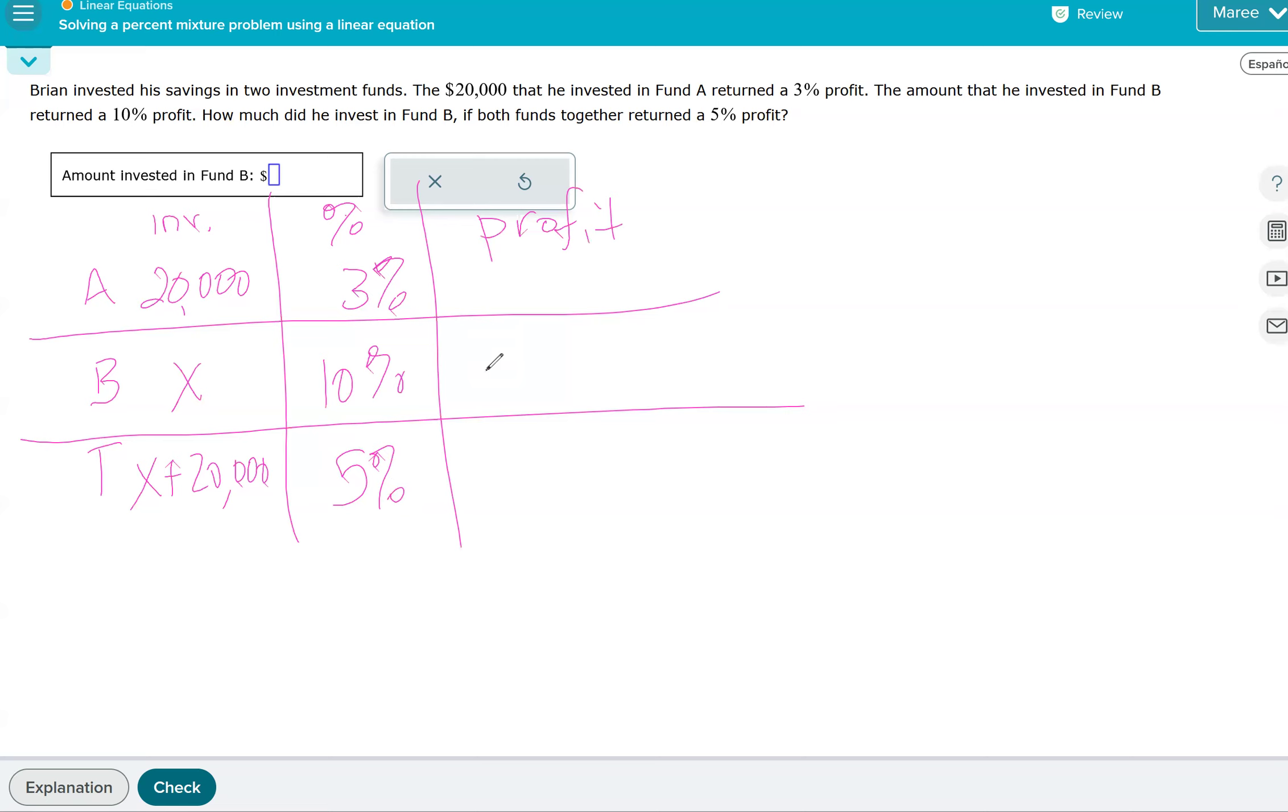So the actual profit, we multiply the percent by the invested amount. So 3% is 0.03 and we multiply that by 20,000. And then we do 10%, that's 0.1 times X, and then 5% for the total. If we add the two profits from A and B, that will give us the total profit. So we're going to add these two together to get the last one.